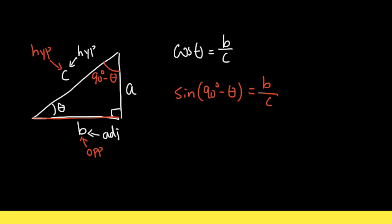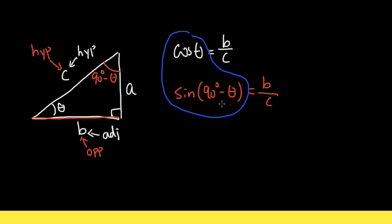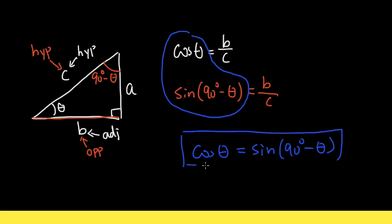Can we see any connection now? Cosine theta equals b over c, and on the other hand, sin of 90 degrees minus theta is also b over c. That tells us these two expressions must be equal to each other, because they are both equal to b over c. So: cosine theta equals sin of 90 degrees minus theta. And this, in fact, is one of the cofunction identities.